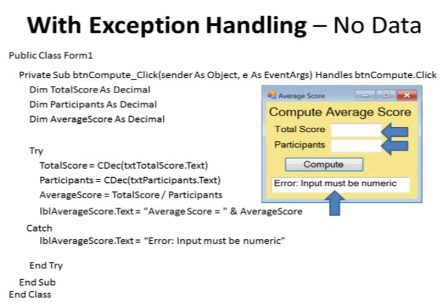We can use try-catch blocks to handle these exceptions inside the program so the user is not confronted with these weird error messages. The conversion of data from the text boxes into decimal and the division will be placed inside the try block, along with the output message for the average score. If everything is fine, all of the code in the try block executes and then we jump right around the catch to the end try statement.